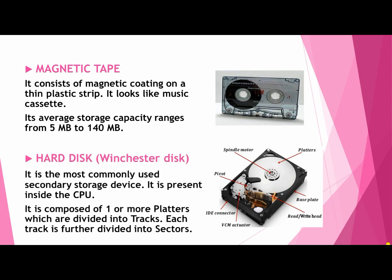Next is the hard disk, also known as the Winchester disk. It is the most commonly used secondary storage device and is present inside the CPU. It is composed of one or more platters which are divided into tracks, and each track is further divided into sectors. As you can see in the image, the key parts are the read-write head, pivot, spindle motor, and platters.